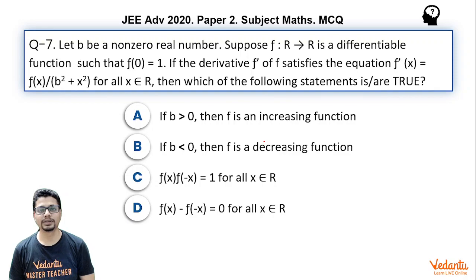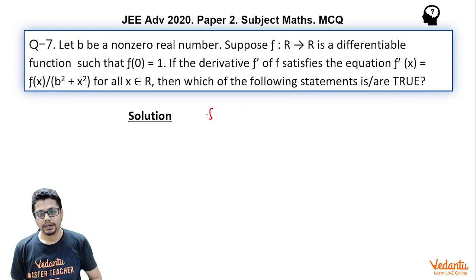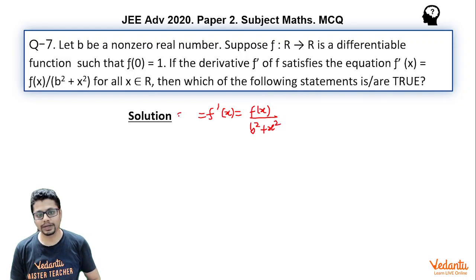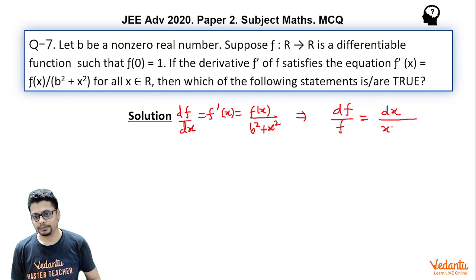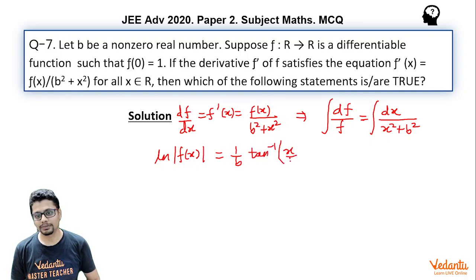Let's solve it. We have f'(x) = f(x) / (b² + x²), which I can write as df/dx = f(x) / (b² + x²). Upon cross multiplication and integrating both sides, I get ln|f(x)| = (1/b) · arctan(x/b) + C, where C is an arbitrary constant.